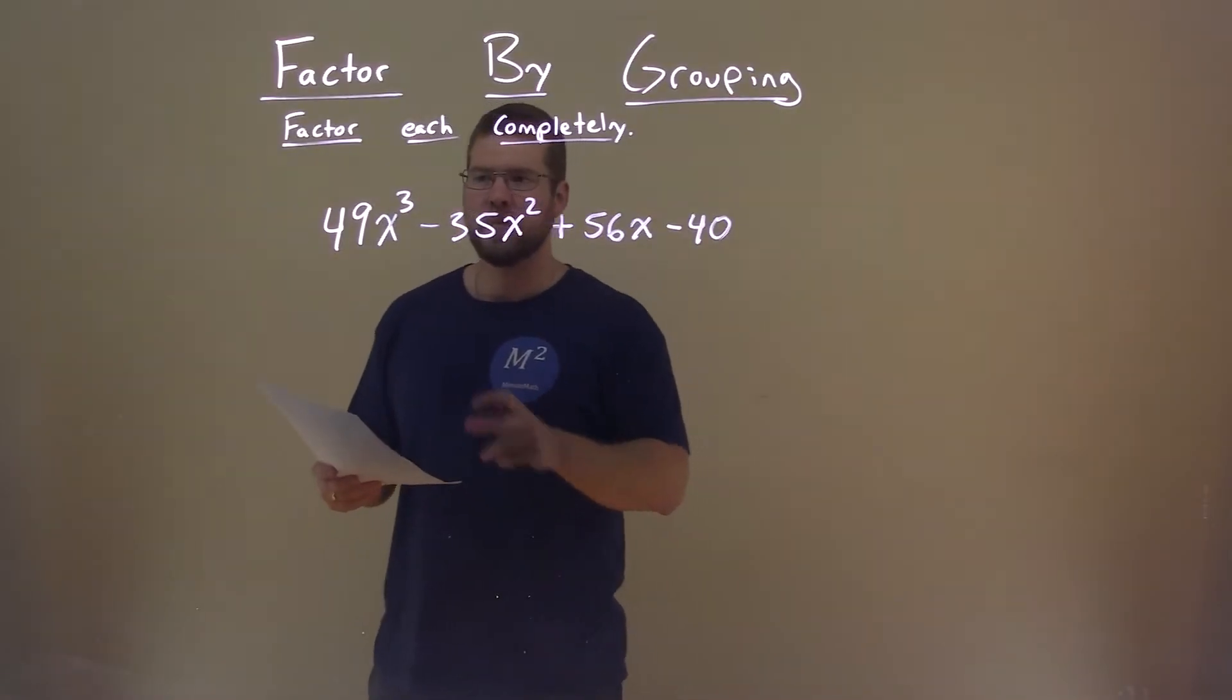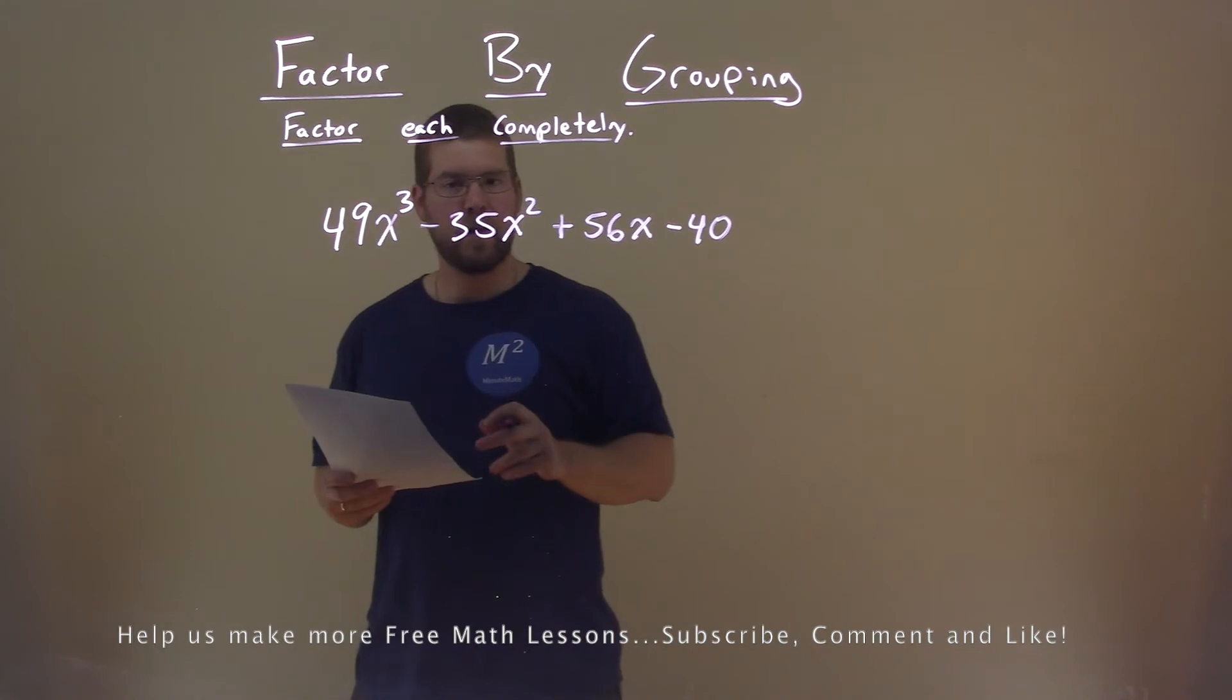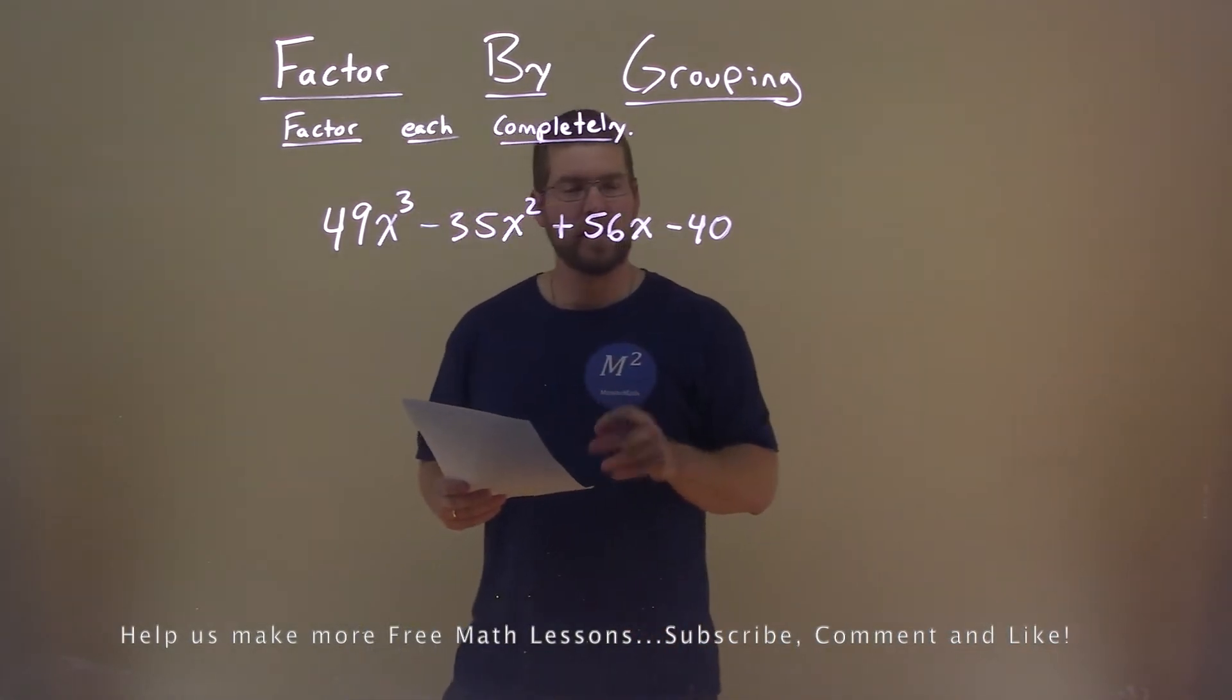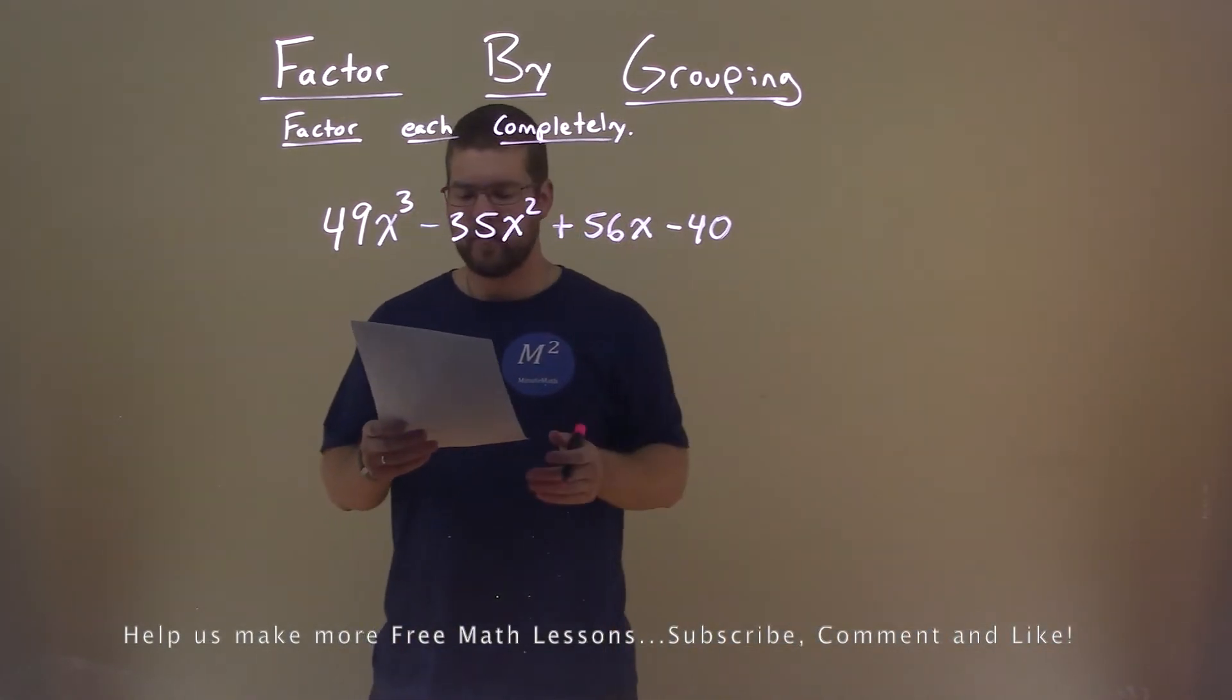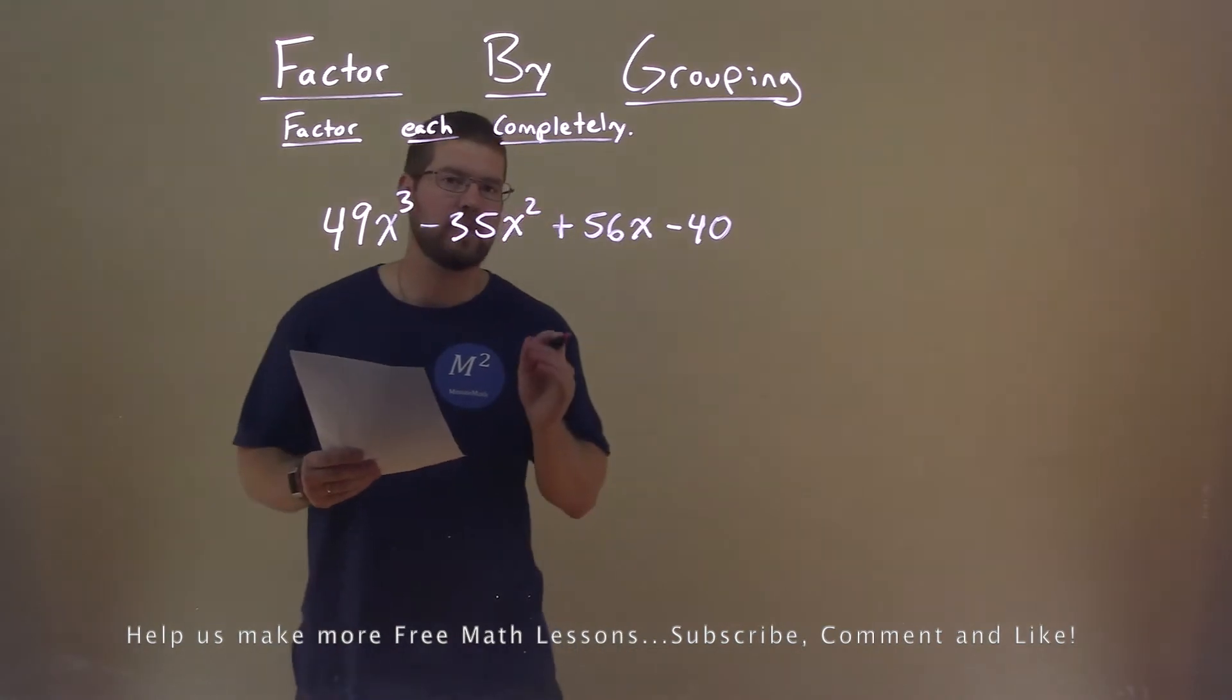We're given this problem right here. 49x to the third power minus 35x squared plus 56x minus 40, and we want to factor this completely.